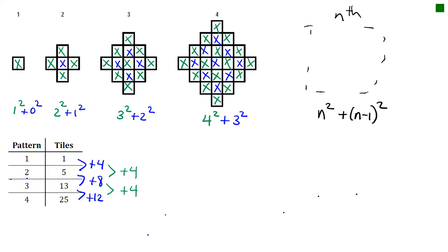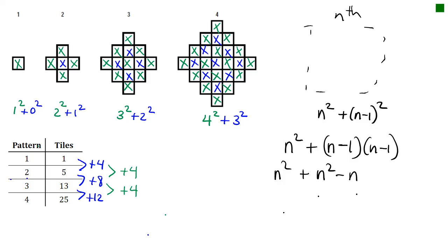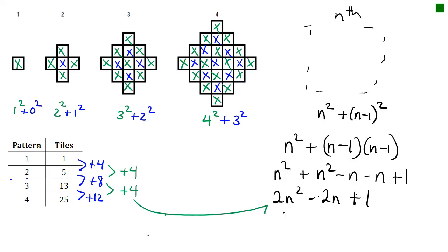We can now square out the blue part. We have N squared plus N minus 1 times N minus 1. Expanding: N times N gives N squared; N times minus 1 gives minus N; minus 1 times N gives minus N; and minus 1 times minus 1 gives plus 1. So we get 2N squared minus 2N plus 1... giving us 2N squared minus 2N plus 1, confirming 2N squared as expected from the second difference of 4 divided by 2. Note that the two squared components don't have to be the same — as long as we find 2 square numbers in the shape, we're perfectly fine.